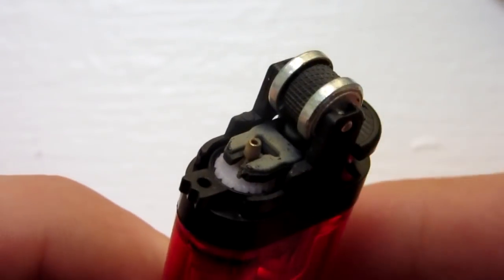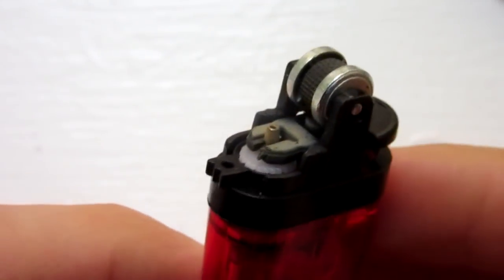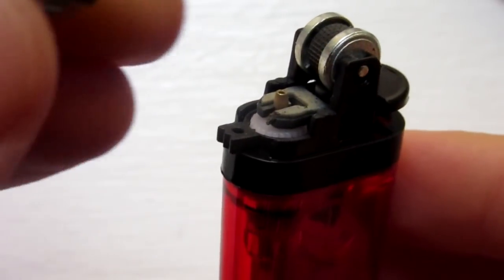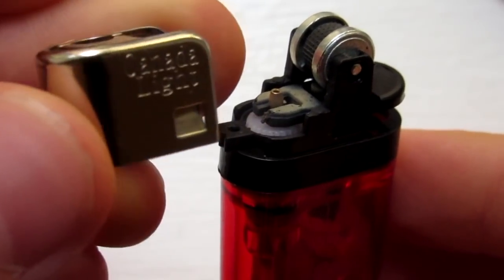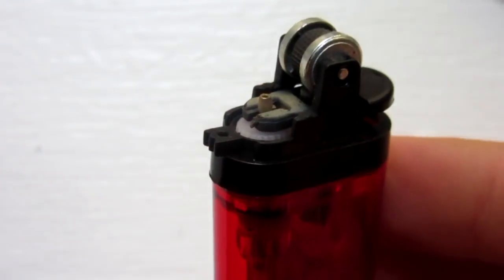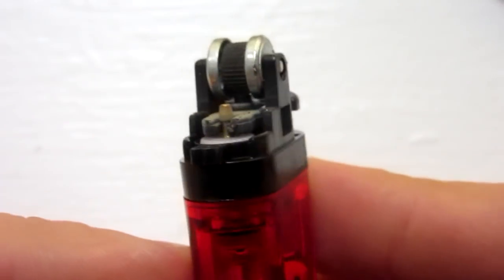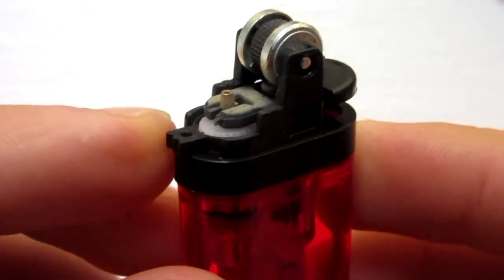So as you can see, I have removed the metal casing, and this is what it looks like right here. That just popped right off. And so now, to adjust the flame, this is the adjuster right here.